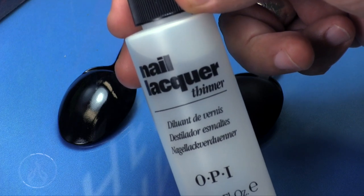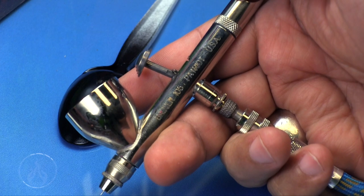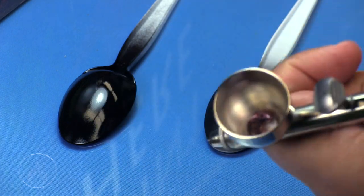This is different from lacquer thinner. Lacquer thinner has a tendency to smell like gasoline. The nail polish remover smells more like an acetone based product.